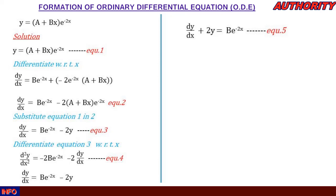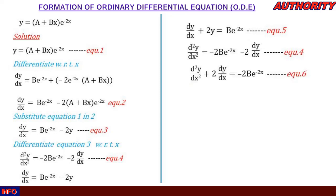Now in equation four: d²y/dx² = -2be^(-2x) - 2(dy/dx). Taking -2(dy/dx) to the left-hand side gives: d²y/dx² + 2(dy/dx) = -2be^(-2x). Call this equation six. Looking at equations five and six, they both share the common term be^(-2x).